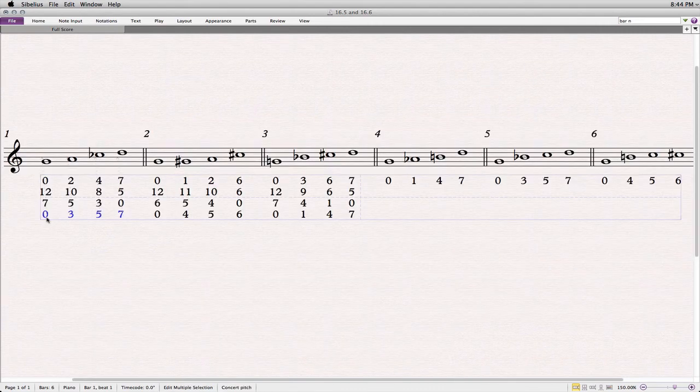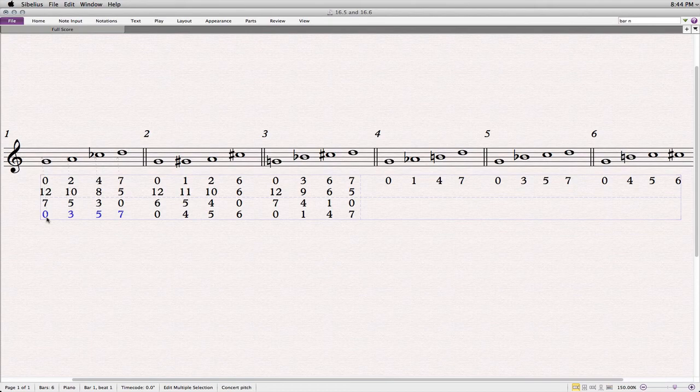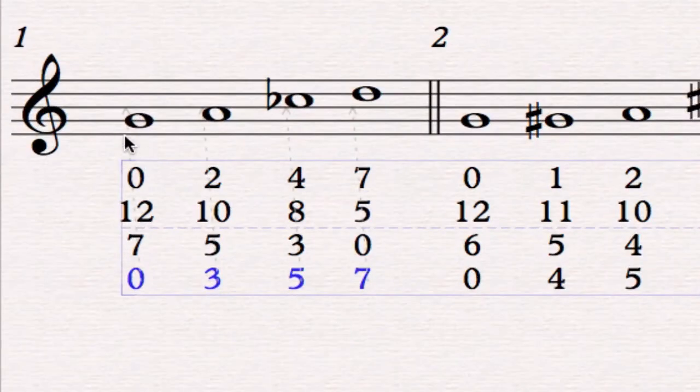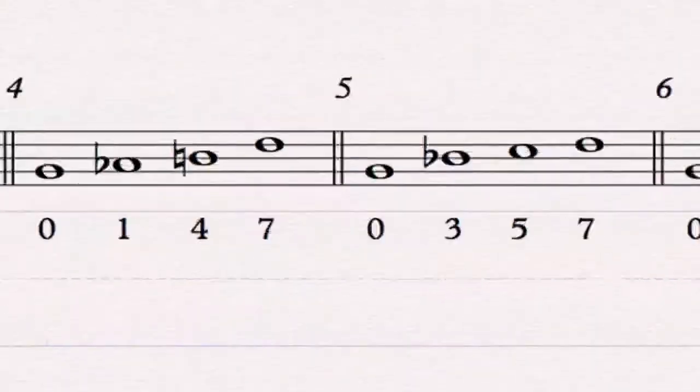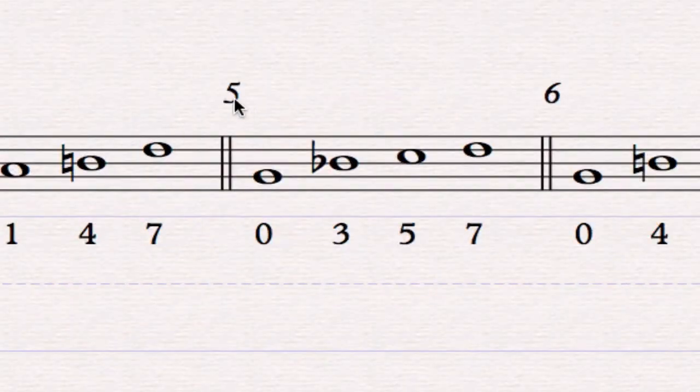So now that we've taken our inversions and put them into normal order, we see that set number 1 here inverts to 0, 3, 5, 7. And that's the same as here, set number 5, 0, 3, 5, 7.